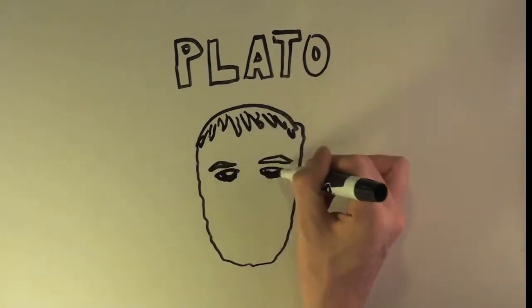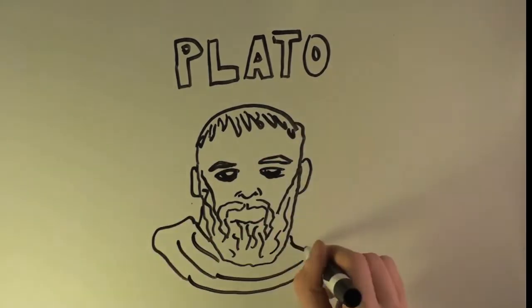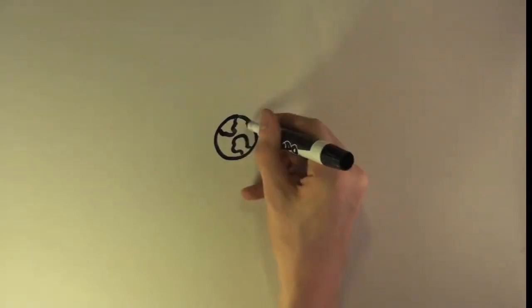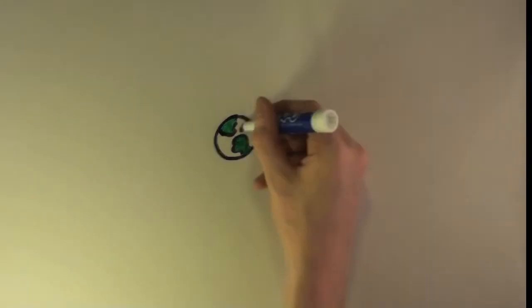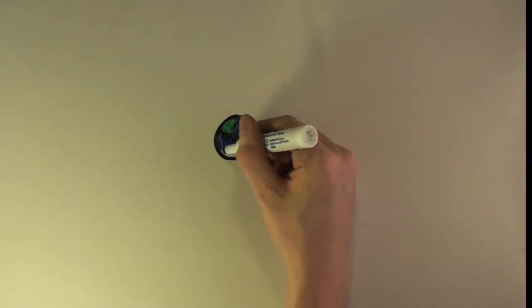Then, Plato comes along. He piggybacks on the idea of the celestial spheres, but modifies it by theorizing that all celestial spheres, including the sun, rotate around the Earth.